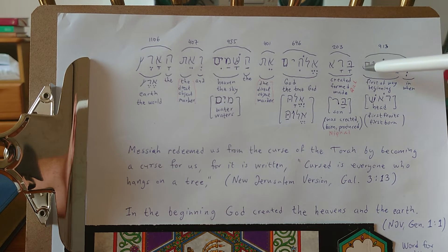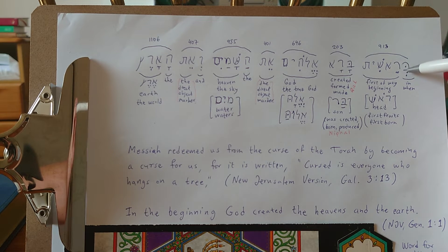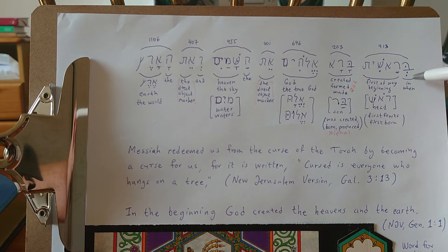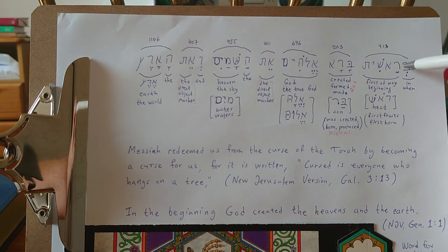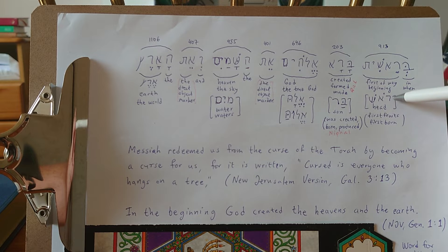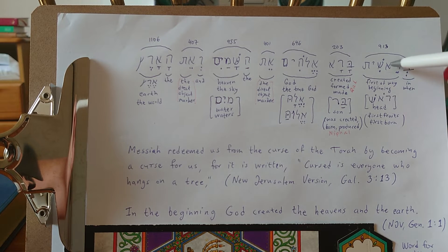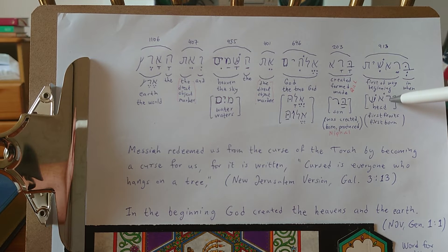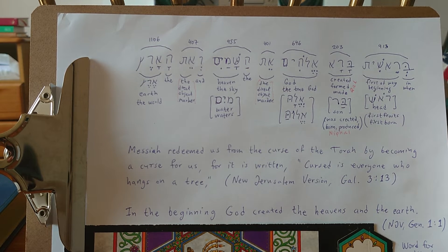The first word here actually consists of two words. First we have a preposition, and two of the meanings are 'in' or 'when.' The second part of the word comes from this word here. Often words have a three-letter root, and this is the root of this word. It reads 'rosh,' meaning 'head,' and there are several meanings of this word.